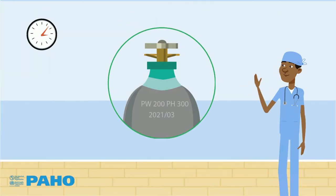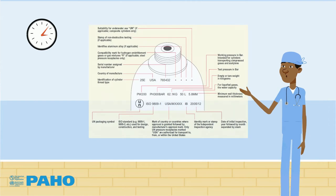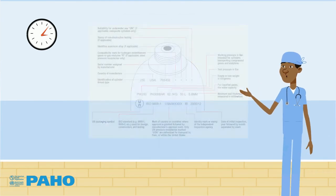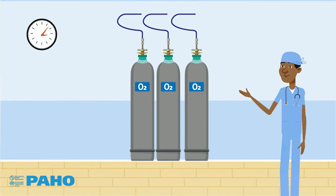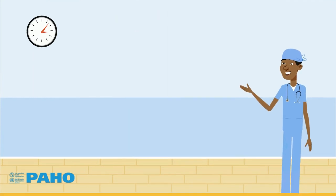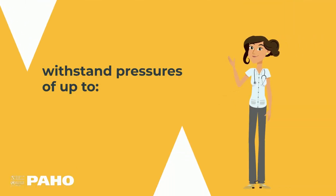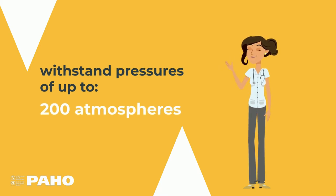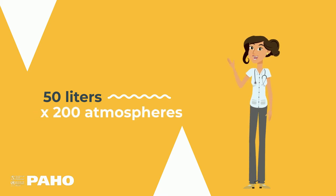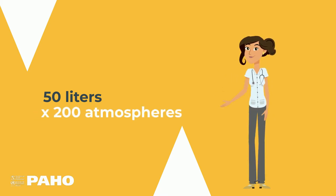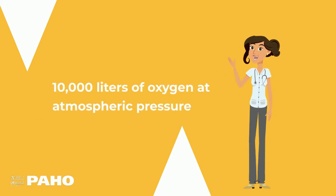The working pressure is also important because it allows the manufacturer to correctly determine the mechanical strength that the cylinder requires and to calculate the amount of gas it can store. Cylinders commonly withstand pressures of up to 200 atmospheres. If the cylinder has 50 liters of internal volume, multiplying 200 atmospheres by 50 liters tells us that we will have 10,000 liters of oxygen at atmospheric pressure inside the cylinder.